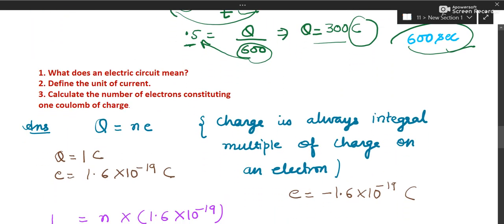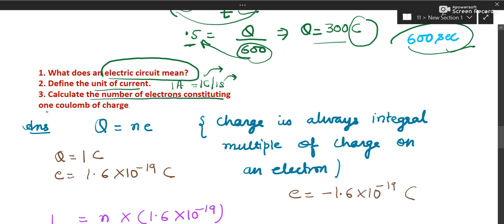Other NCERT questions: What does electric circuit mean? It is a closed and continuous path through which electric current flows. Define the unit of current: 1 ampere equals 1 coulomb per second — if a charge of 1 coulomb flows through a wire in 1 second, the current is said to be 1 ampere.